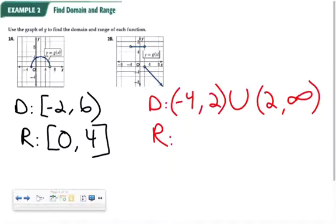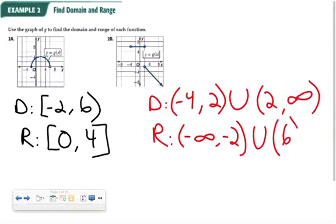My range, looking at my graph from bottom to top, I see that it goes from negative infinity to negative 2. And then once again, I have to take into account that there's this gap here that picks back up at 6. And that's my domain and range for those problems.